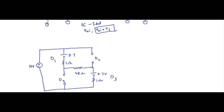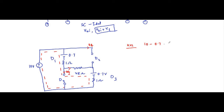Now, if we want to find out this current flowing through the 48 ohm resistor, we have to apply KVL in this direction. No current will flow through these paths.